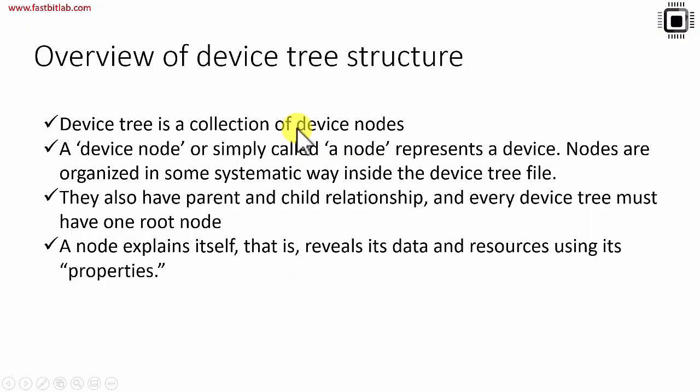Welcome back to the lecture. In this lecture, let's understand device tree structure. A device tree is a collection of device nodes in a tree fashion. A device node, or simply called a node, represents a device. Nodes are organized in a systematic way inside the device tree file, and they have parent and child relationships. Every device tree must have one root node.